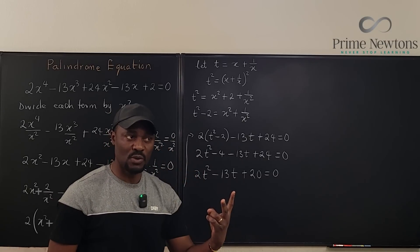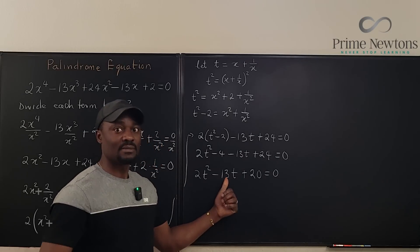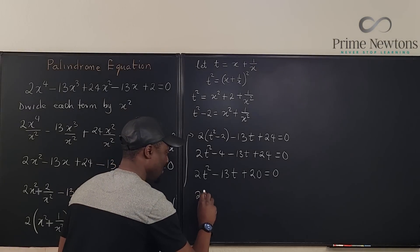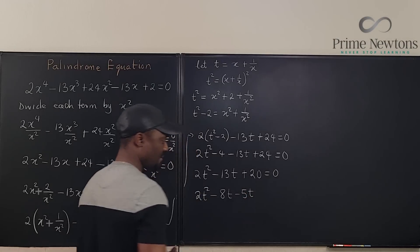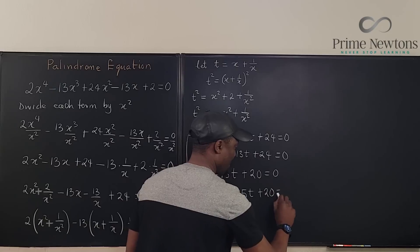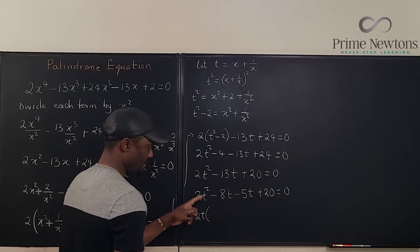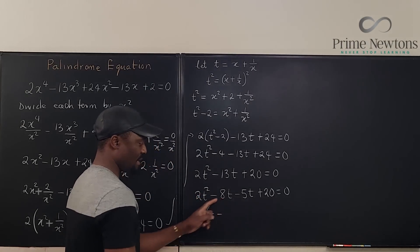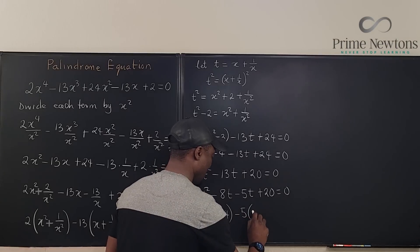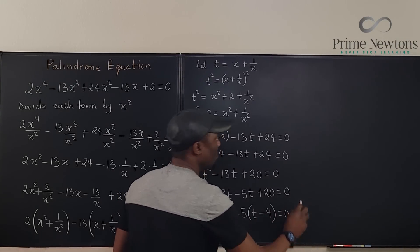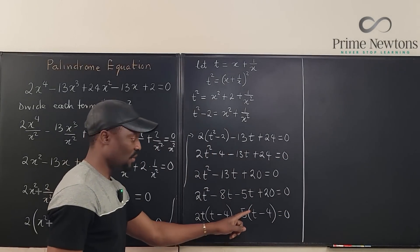Replace -13t with -8t - 5t: 2t² - 8t - 5t + 20 = 0. Factor the first two terms — 2t is common, giving 2t(t - 4). Factor the last two terms — -5 is common, giving -5(t - 4). So we get (2t - 5)(t - 4) = 0, meaning 2t - 5 = 0 or t - 4 = 0.